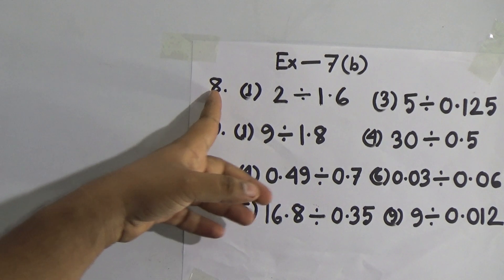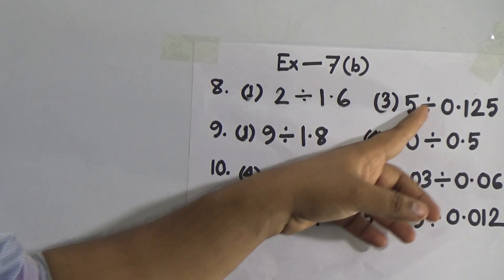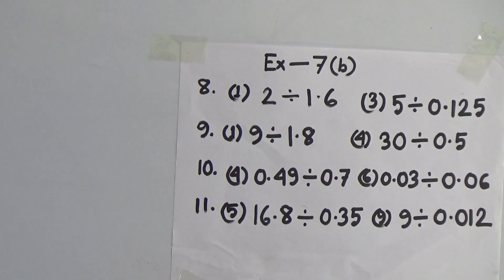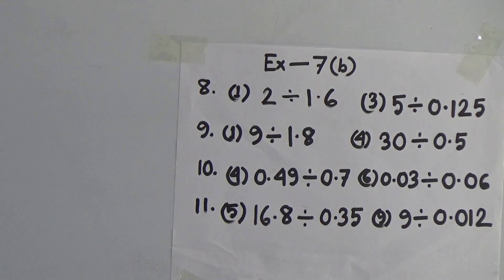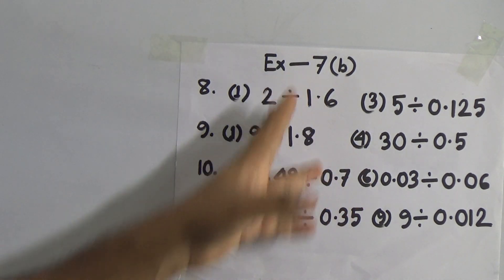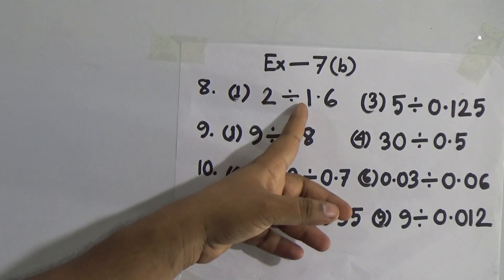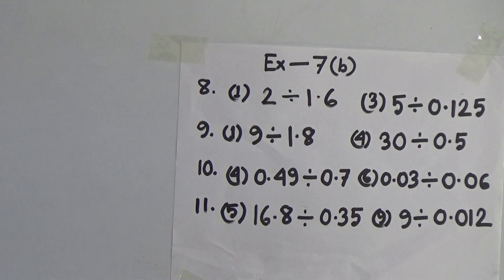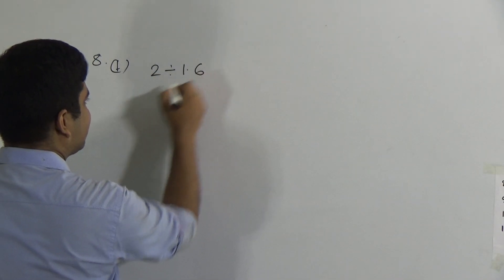Eight number question: sub-problem 1 is 2 divided by 1.6, and sub-problem 3 is 5 divided by 0.125. In your textbook this question is given as fill in the blanks, but you need to practice this problem just like a division. So here number 1: 2 divided by 1.6.